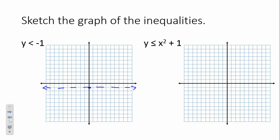The next thing we have to do is decide which way to shade. I always think about less than — it's made with my left hand, so I want to go below. To be sure, you can plot a test point: is negative 2 less than negative 1? Yes. So we're shading down.